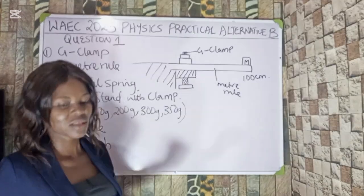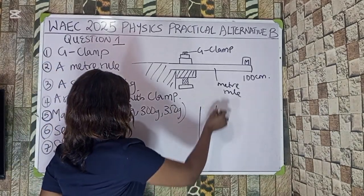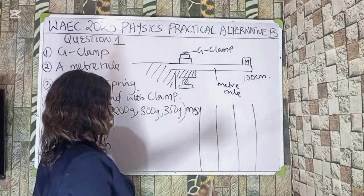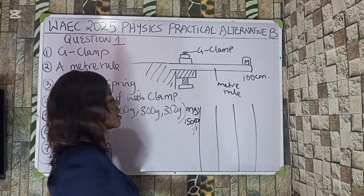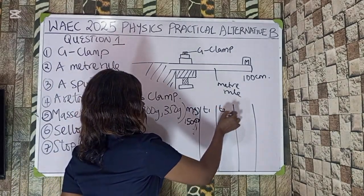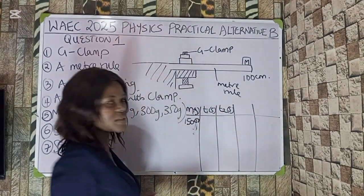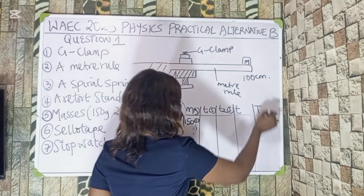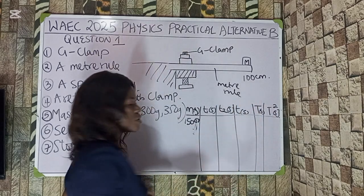You are going to record this time, so your observation table is going to have: mass (M), time t1, and repeated time t2 — both measured in seconds. You will then find the total time T and the period T, followed by period squared T², measured in seconds squared.